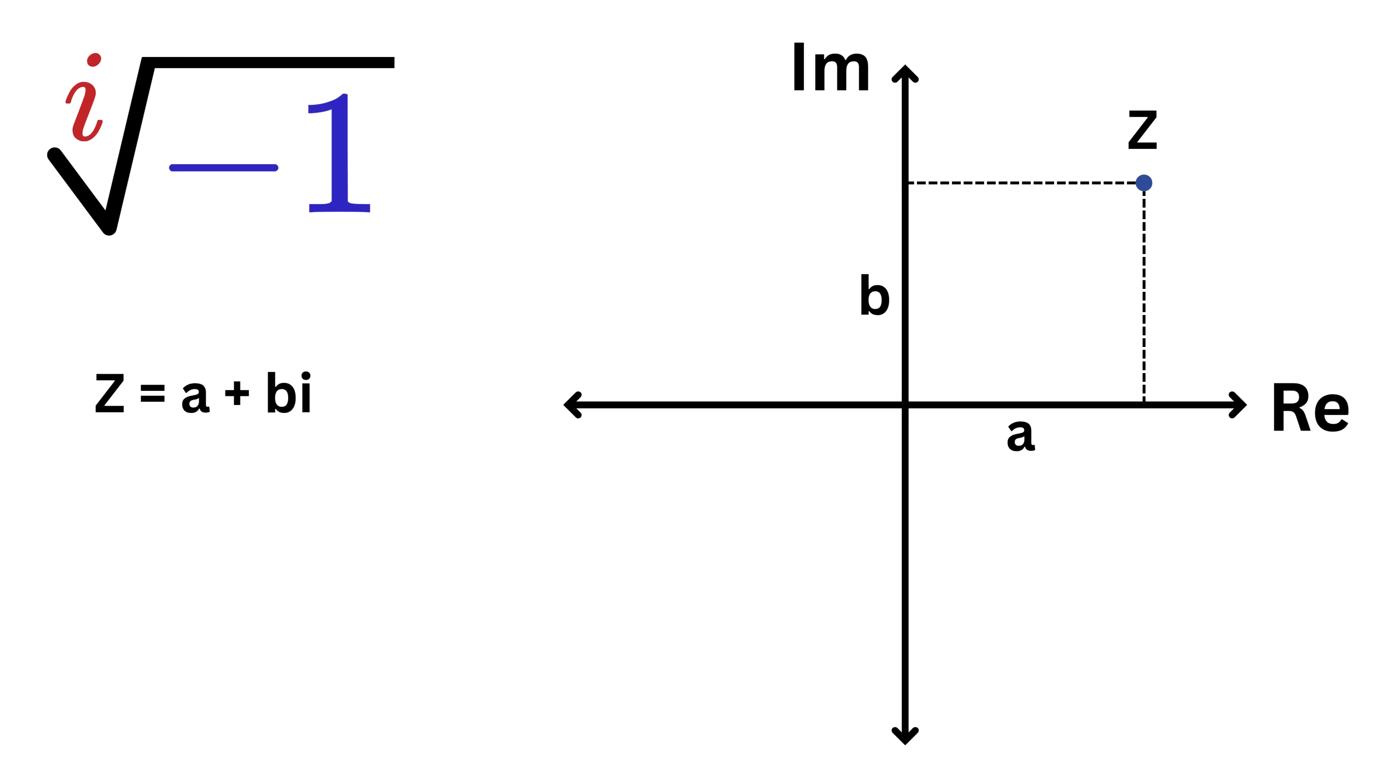But this same point z can also be represented in another way, which is in polar form. For that, we draw a line from the origin to the point z. The length of this line is called the radius or modulus, and the angle it makes with the positive real axis is called theta, or the argument of the complex number. Using trigonometry, this point will have its real part as r cos theta and the imaginary part as r sin theta. So, this point can be written as r cos theta plus i r sin theta.